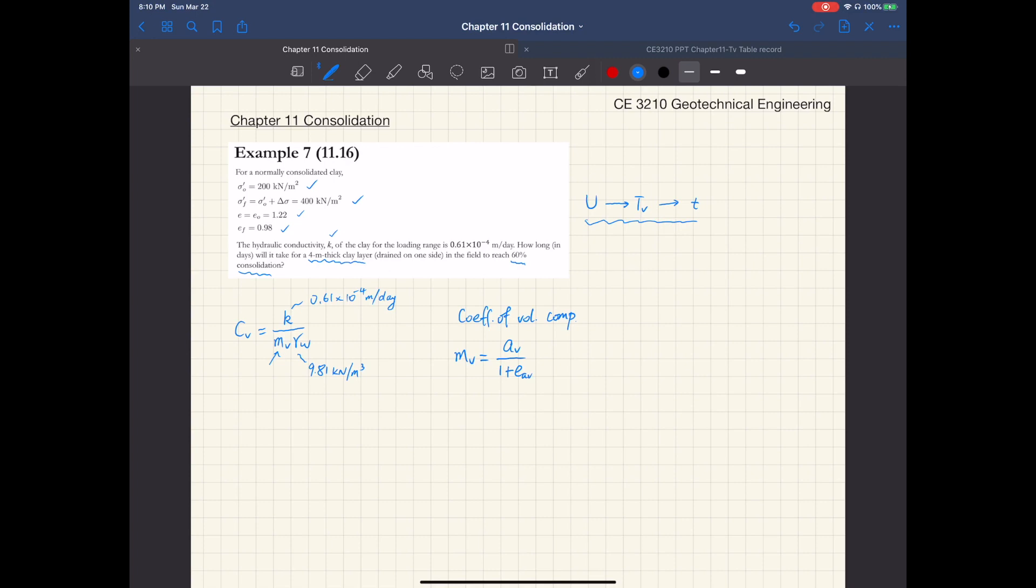And A sub V is defined as the change in void ratio delta E over the change in effective stress delta sigma prime, which is the same as delta sigma over 1 plus E sub AV.